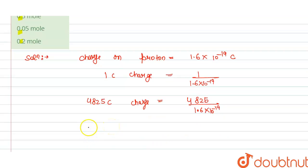can say that moles is equals to protons divided by Avogadro number, that is our NA. So this will become 4825